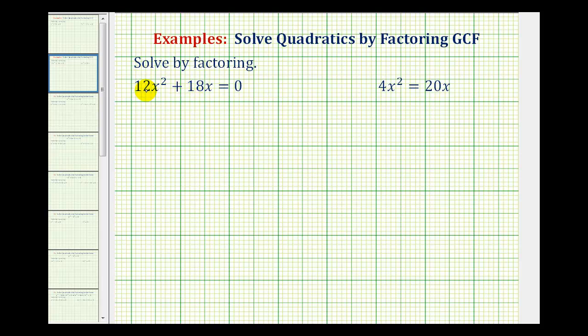So to find the prime factorization of 12, we'll make a factor tree. 12 is equal to 4 times 3, and 4 is equal to 2 times 2. So again, if it's helpful, we could write 12x squared as 2 times 2 times 3, and then x squared is equal to x times x.